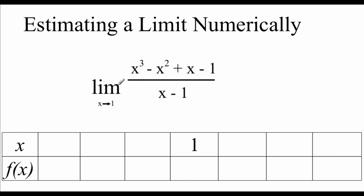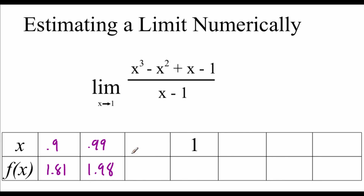The same thing is happening in this next example, looking at the limit as x approaches 1. We can't plug 1 in for x because we'd get 0 on the bottom of the fraction. But we can figure out what value we're getting close to. Approaching from the left: at 0.9 we get 1.81, at 0.99 we get 1.98, and at 0.999 we get 1.998.